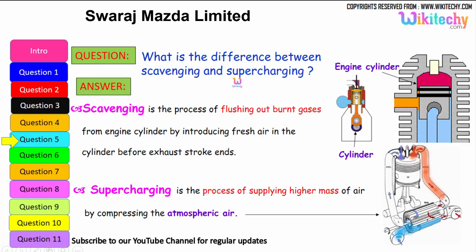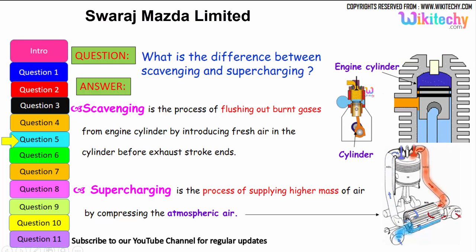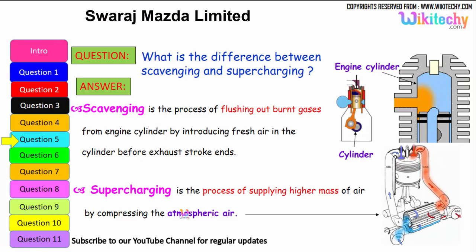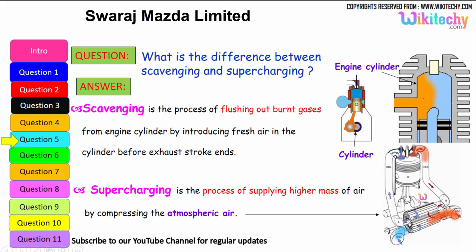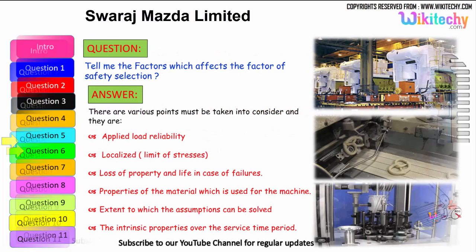What is the difference between scavenging and supercharging? Scavenging is the process of flushing out the burnt gases from the engine cylinder by introducing fresh air into the cylinder before the exhaust stroke ends. Supercharging is the process of supplying a high volume of air by compressing atmospheric air — high pressure air is injected into the cylinder to compress the atmospheric air.